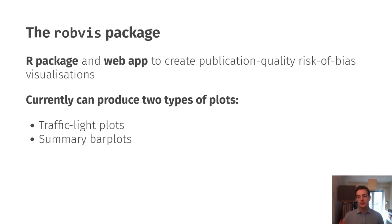It's an R package and web app to produce publication quality risk of bias figures. Currently it can produce two types of plots: traffic light plots and summary bar plots, and I'm just going to show you a brief example of these now.